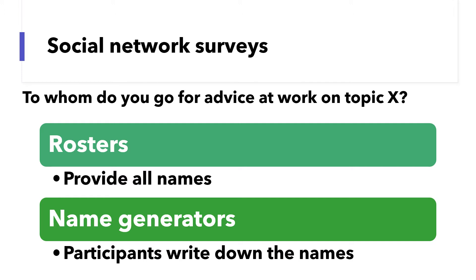First, roster instruments are perhaps the most common type of instrument for network data collection. You start with a survey question such as, 'To whom do you go for advice at work on topic X?' As a researcher, you provide your research participants with a list of names. You ask the participants to mark the names of those whom they went for advice, but leave the others blank. Roster instruments are easy to use. They can minimize false negatives because the participants may not be able to remember everything. The downside of rosters is that the instrument length can grow fast and eventually becomes unmanageable — it is difficult for your research participants when you provide a roster with 50 names.